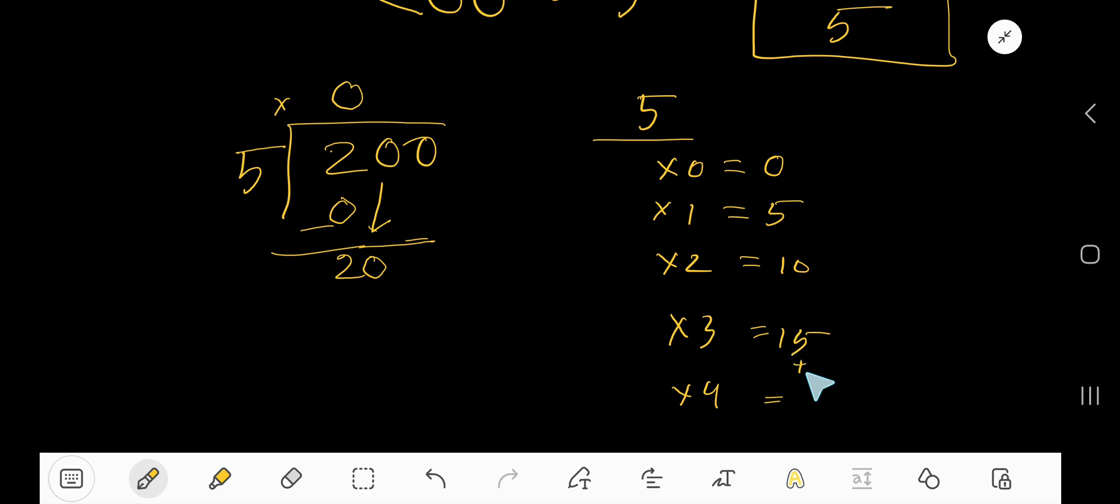5×4=20, so take 4. 5×4 or 4×5 equals 20. Subtract to get zero, then have another zero.